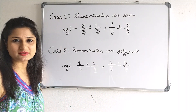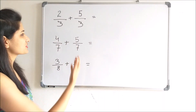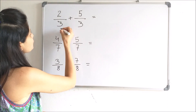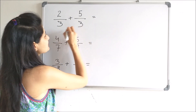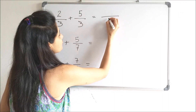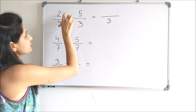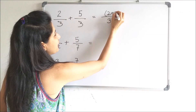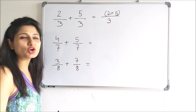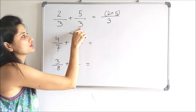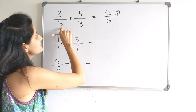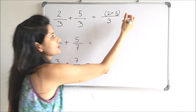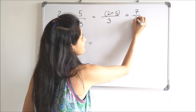Let us start with case one. Suppose we have to add fractions whose denominators are same. Our first example is 2 by 3 plus 5 by 3. Since the denominators are same, we will write the denominator as it is and we will add the numerators. We will add 2 and 5. Why are we adding the numerators? Because we have to add these two fractions. So it will give us 7 by 3.